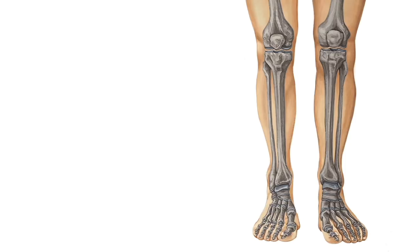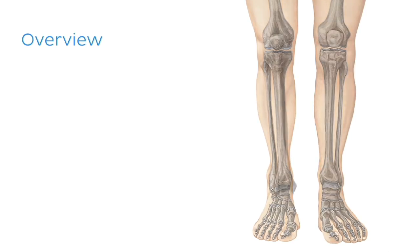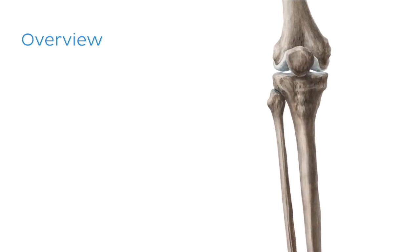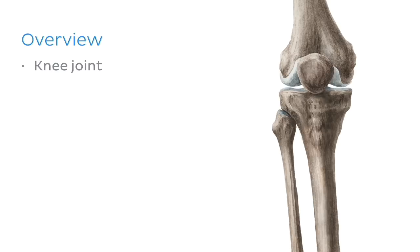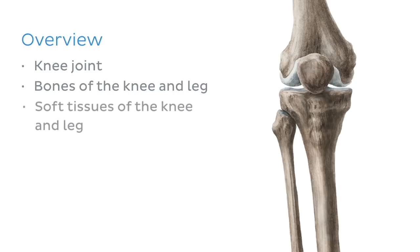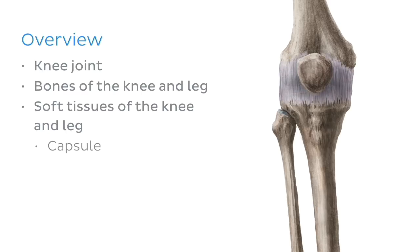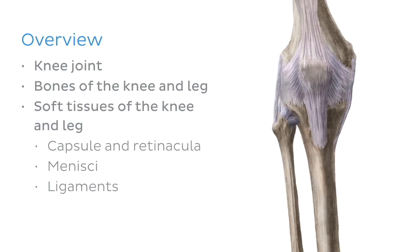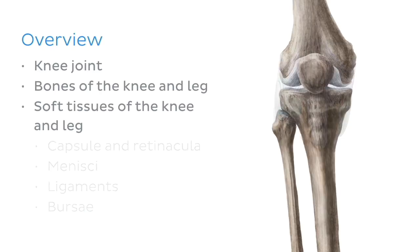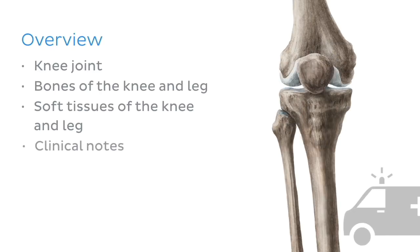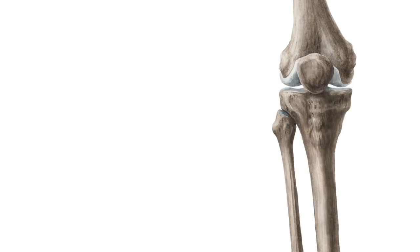So when I say we're going to be talking about the bones and soft tissues of the leg, I'm really talking about this region here, between the knee and the foot. Now that we've got the terminology down, I'd like to give you a quick overview of what we're going to be talking about in this tutorial. First, I'm going to quickly introduce you to the knee joint and the bones that form this joint. We'll then look at the bones of the knee and the leg, focusing on their bony features and muscle attachment points. Next, we'll talk about some soft tissues of the knee and the leg, including the capsule and retinaculum, the menisci, the ligaments, and the bursae. Finally, we'll bring our tutorial to a close with some clinical notes about shin splints.